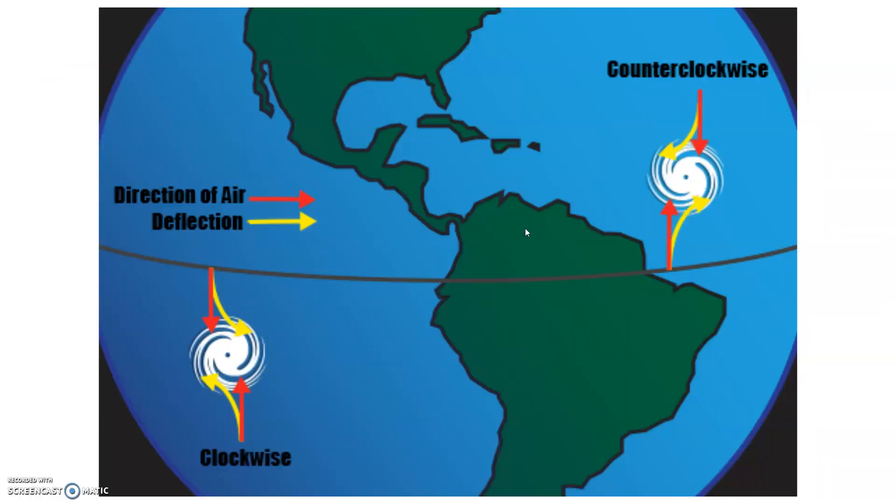Because of this, this is how we get storms that rotate in the way that they do. Let's say we're in the northern hemisphere where things are being deflected to the right. In a storm, you have an area of low pressure in the center, so air is rushing towards that center.